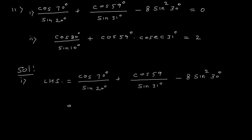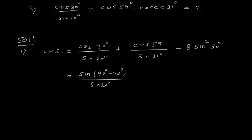I will convert cos into sin using the complementary formula. So cos70° = sin(90° − 70°) / sin20°, and cos59° = sin(90° − 59°) / sin31°, minus 8. The value of sin30° = 1/2, so this is (1/2)².